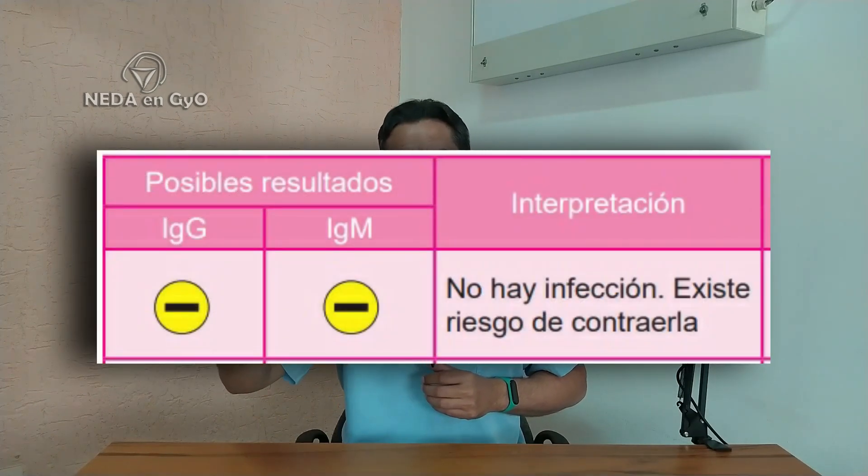Ahora viene probablemente la pregunta más importante: cómo interpretar los resultados. Cuando el médico le informa si usted tiene o no la infección, es importante que tanto el personal de salud como el paciente lo entiendan, porque es algo realmente sencillo. Si el resultado tiene IgM negativo e IgG negativo, eso quiere decir que usted no tiene la infección y es suficiente con tomar las medidas preventivas ya mencionadas.